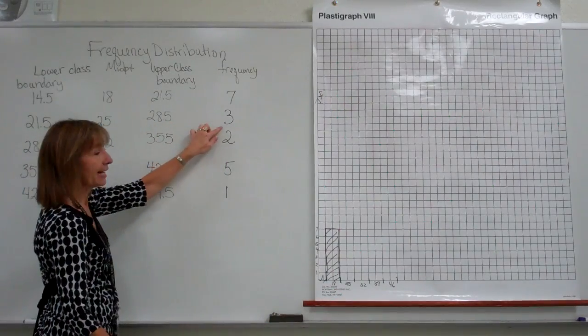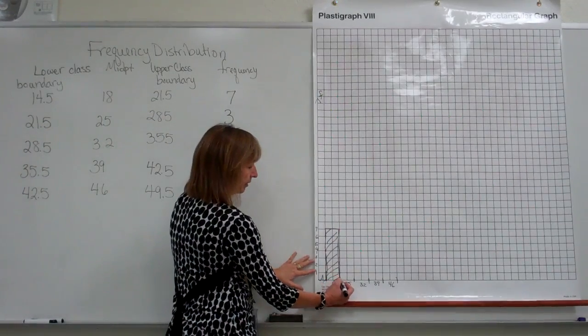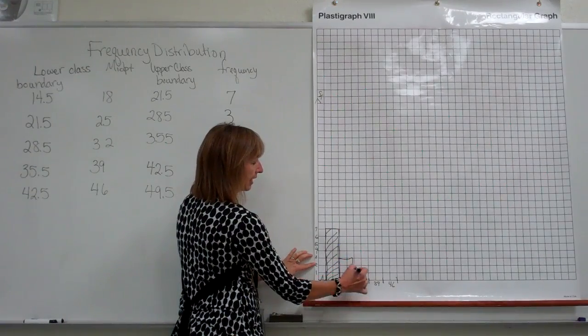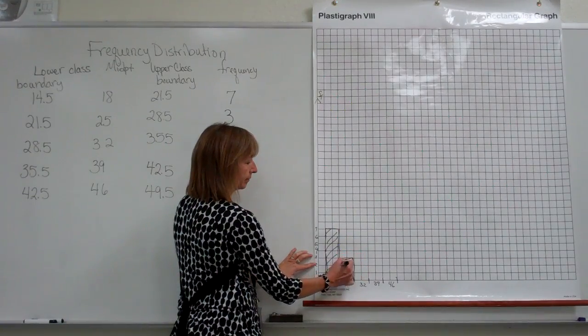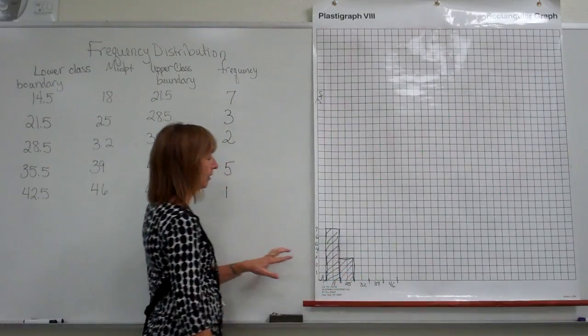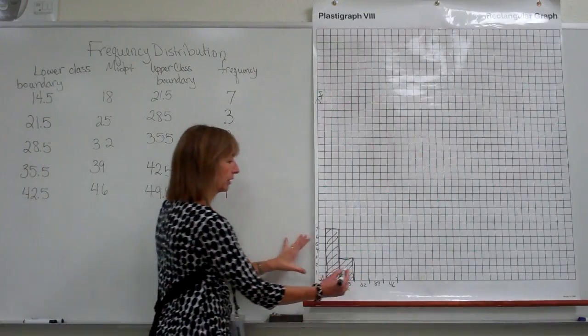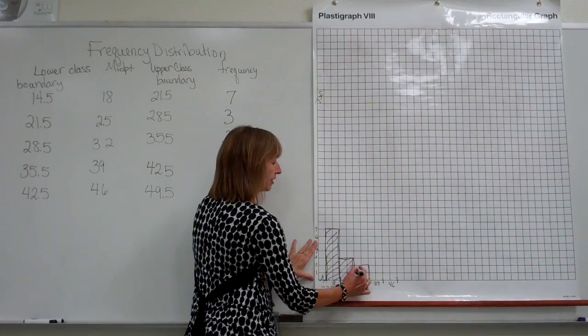For the second class, our frequency was 3. So we'll go a height of 3 for the second class. For the third class, our frequency was 2. We'll have a height of 2 for the third class.